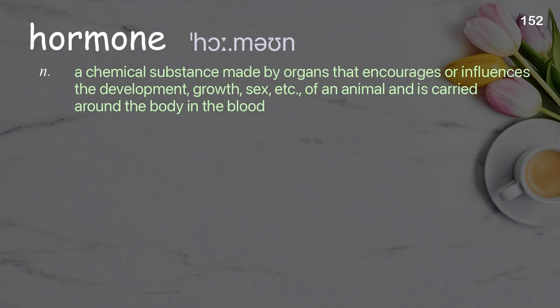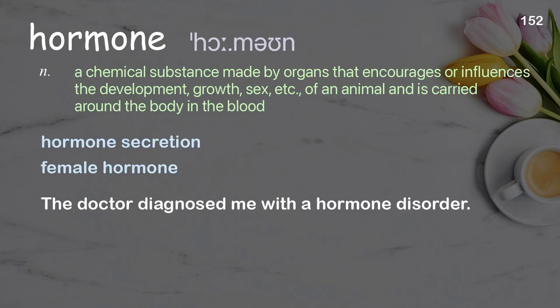Hormone: a chemical substance made by organs that encourages or influences the development, growth, sex, etc. of an animal, and is carried around the body in the blood. Examples: hormone secretion, female hormone. The doctor diagnosed me with a hormone disorder.